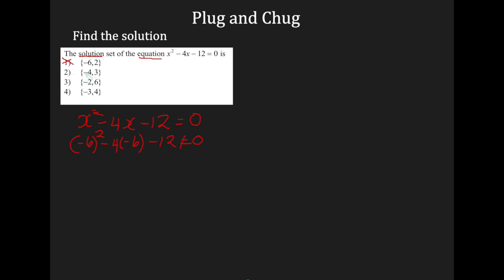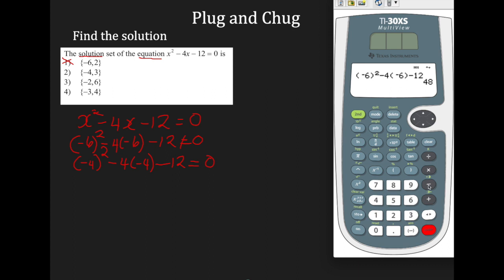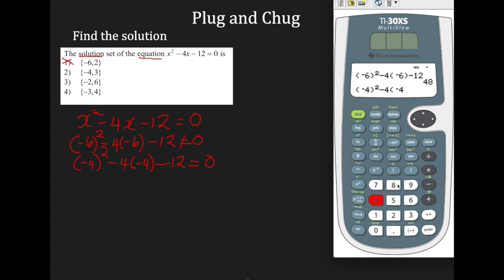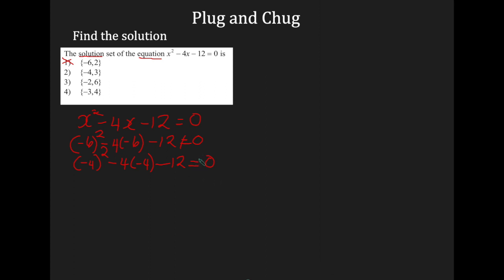Let's move on to choice 2 and try negative 4. So negative 4 all squared minus 4 times negative 4, take away 12 — will I get 0? Open parentheses, input negative 4, square all of that, subtract 4 multiplied by negative 4, then subtract 12. I hit enter and get a value of 20 — it does not equal 0. So it didn't work for negative 4. I'm not even going to bother entering the second number. Remember, it must work for both numbers in the set.